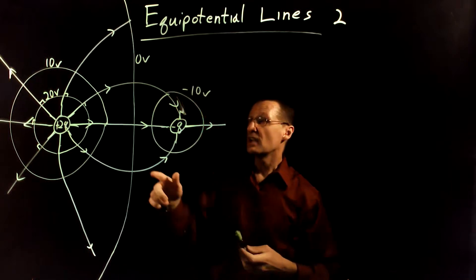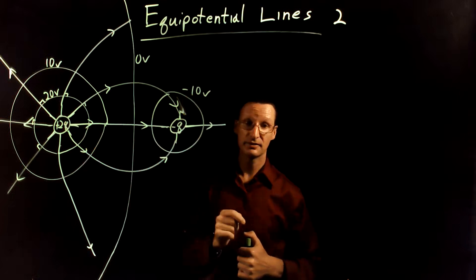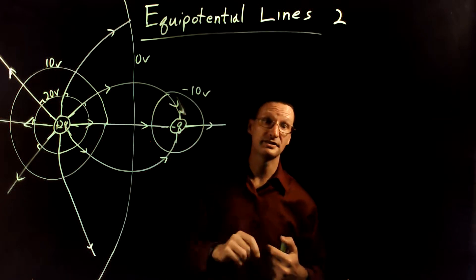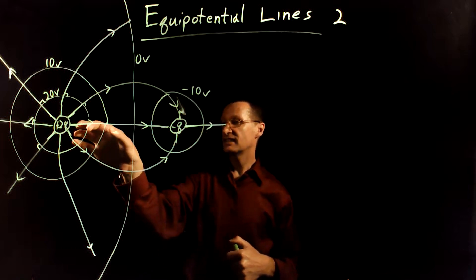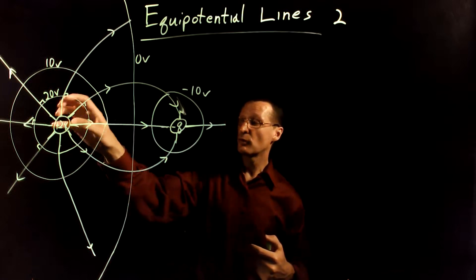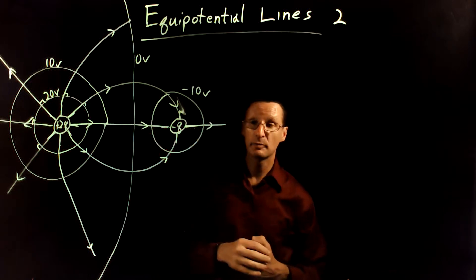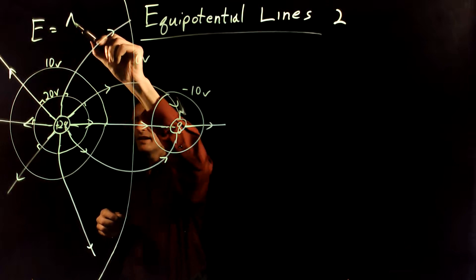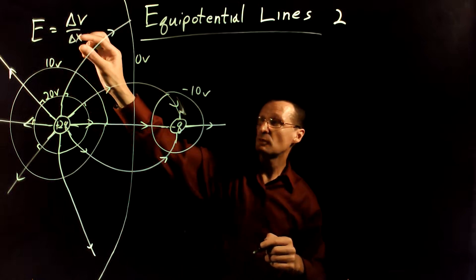A few key points here. First, I know I need to go from high potential to low potential when I go from a positive charge to a negative charge. The way I know that is if I put a positive test charge here, it would move from high potential to low potential — that's what positive charges do. Second, the spacing of the lines near the larger charge is going to be a lot smaller than the spacing near the smaller charge, because it is a bigger electric field. Electric field tells you how the voltage lines are spaced — for larger electric fields, the spacing is going to be smaller.